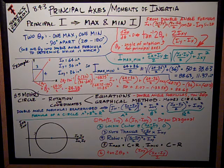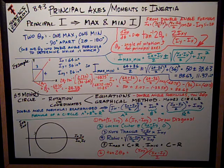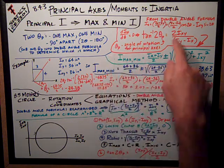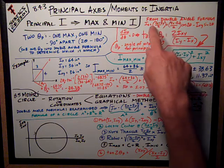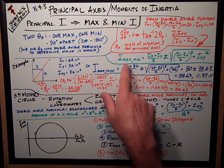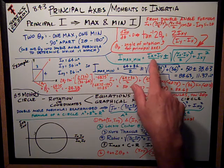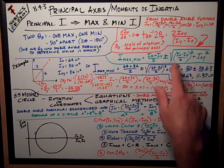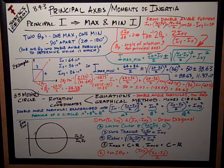Once I know what theta_p is, I can rearrange my, I can substitute theta_p is equal to that, 2 theta_p is equal to that, or the tangent of that is into the double angle formulas, and I can get a direct formula for my maximum and minimum moments of inertia. That is, the I_max and minimum is equal to this term, I_x plus I_y over 2, plus or minus the square root of this expression, I_x minus I_y over 2 squared, plus I_xy squared.